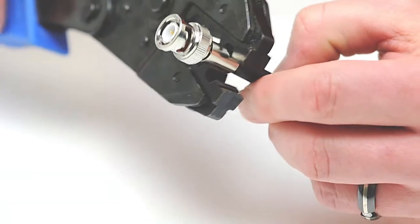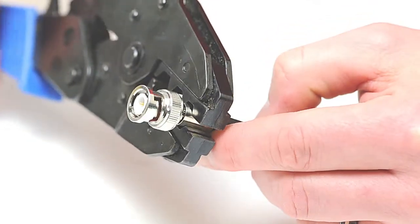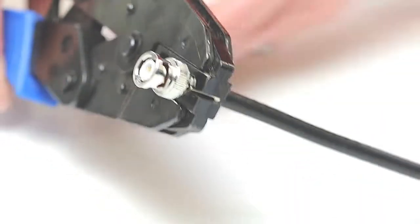Take your crimp tool and crimp the ferrule onto the jacket. This will create a secure connection.